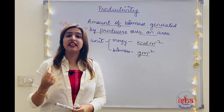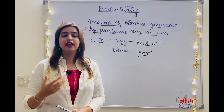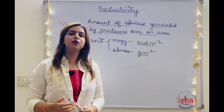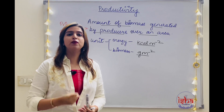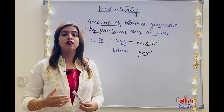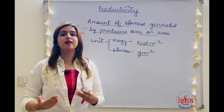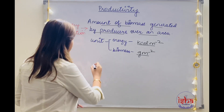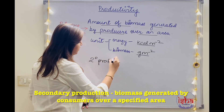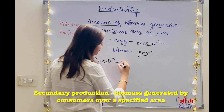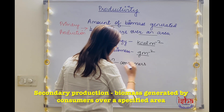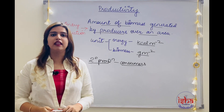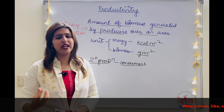Now, what is secondary production? It seems obvious — the biomass generated by the secondary producers, who are in fact the consumers. If a herbivore is eating a plant, it will also be building its own body; some biomass will be generated. So that is called secondary production — the biomass that is generated by consumers over a specified area. The units remain the same.